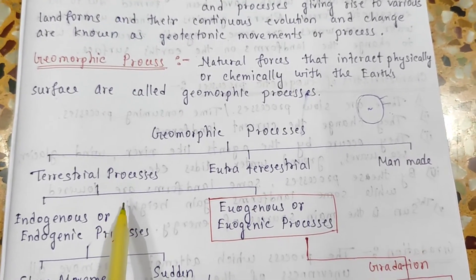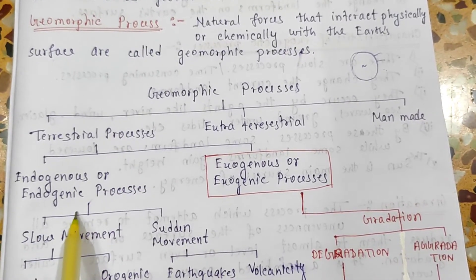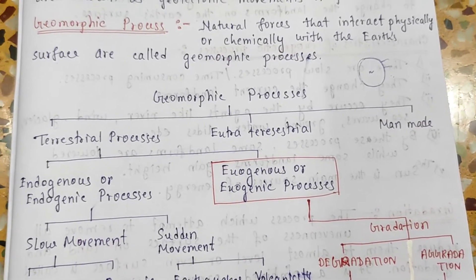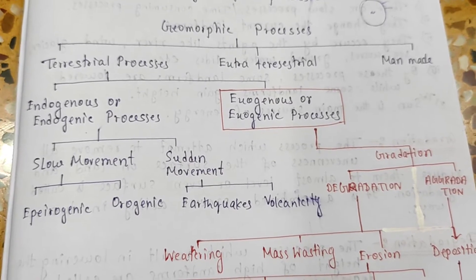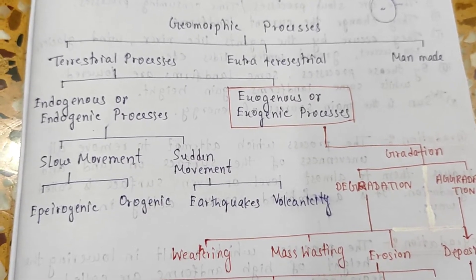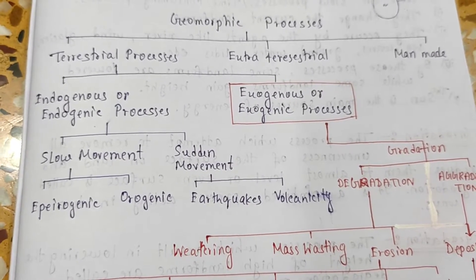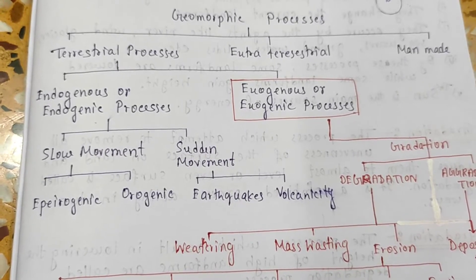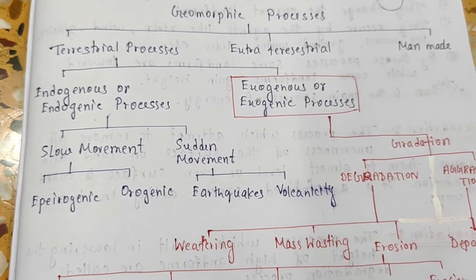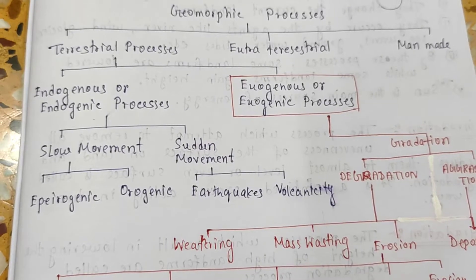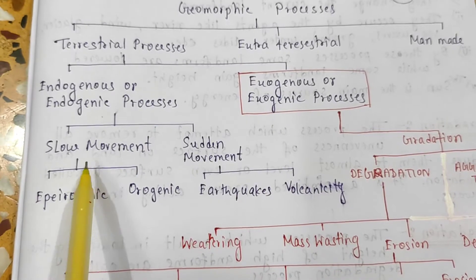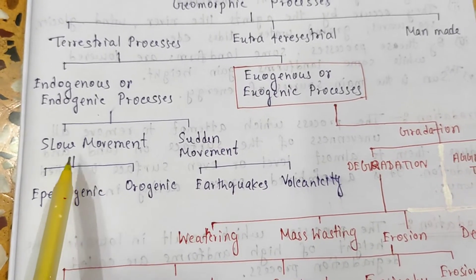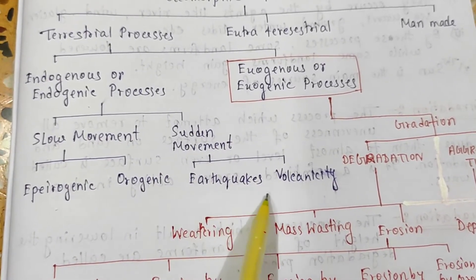Terrestrial processes can be grouped into two parts: endogenous or endogenic process, and exogenous or exogenic process. The forces that act from within the earth are called endogenic forces. These forces cause two types of movement: vertical movement and horizontal movement, giving birth to various relief features such as plateaus, plains, lakes, falls, etc. Volcanic eruption and earthquakes are also a result of endogenic processes. Endogenic processes work in two types: slow movement and sudden movement. Epeirogenic and orogenic movements are two groups of slow movement, while sudden movements include earthquakes and volcanicity.